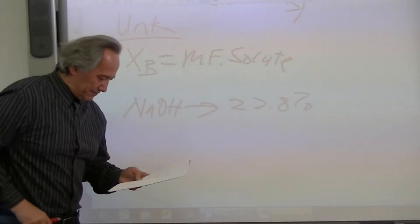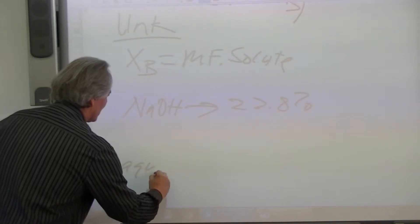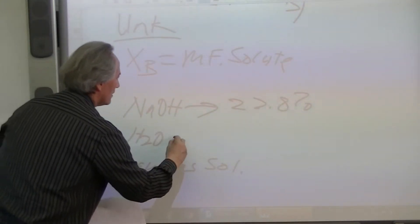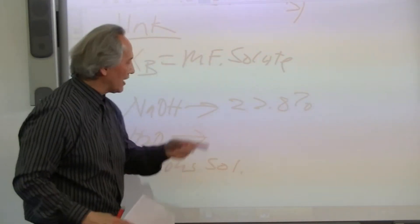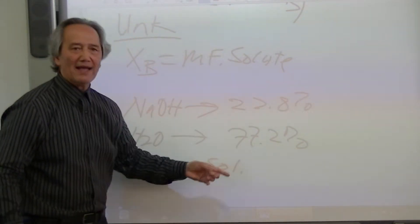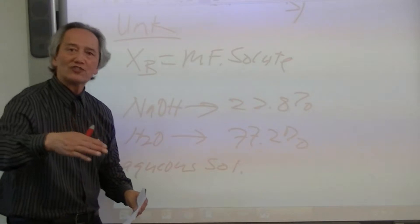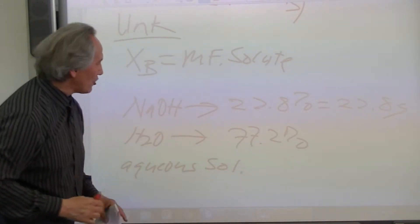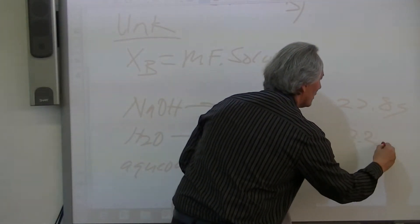From the problem, sodium chloride is given as 22.8%. Since this is an aqueous solution, our solvent is H2O. Subtracting 22.8% from 100% gives us 77.2% for the water. We can express these as standard numbers: 22.8% sodium hydroxide equals 22.8 grams, and the water at 77.2% equals 77.2 grams.